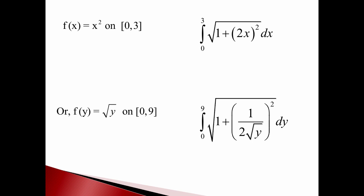I write down the integral from zero to nine square root of one plus the derivative squared. The derivative of the square root of y is one over two square root of y, all that squared, dy. Why might you want to do that? You might hope that having a square root in there when you square it, maybe it gets a little easier.